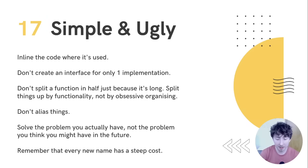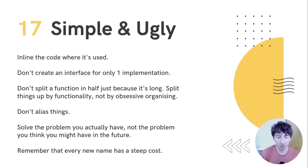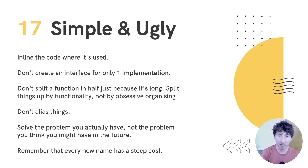Avoid aliasing things — don't have two names for the same data, the same variable, the same location in memory. Always try to solve the problem you actually have now, not the problem you think you might have in the future, because if naming is hard when you're naming something you actually have, try naming something you don't even have yet — it's almost impossible. Remember that every new name you introduce has a cost. They're not free, so don't use them like they are.